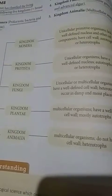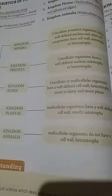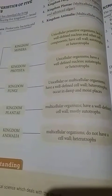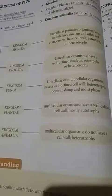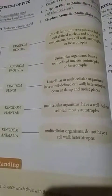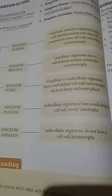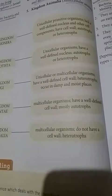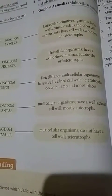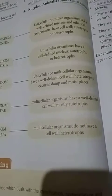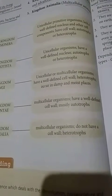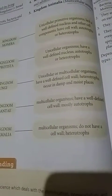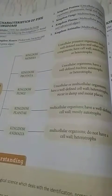Kingdom Protista: unicellular organisms with a well-defined nucleus, and can be autotrophs or heterotrophs. Then there are unicellular and multicellular organisms - unicellular means made up of only a single cell, multicellular means made up of more than one cell. These have a well-defined cell wall, meaning the outer wall is present, and they are heterotrophs, dependent on others for food. Multicellular organisms with a well-defined cell wall are mostly autotrophs, meaning they prepare their own food.